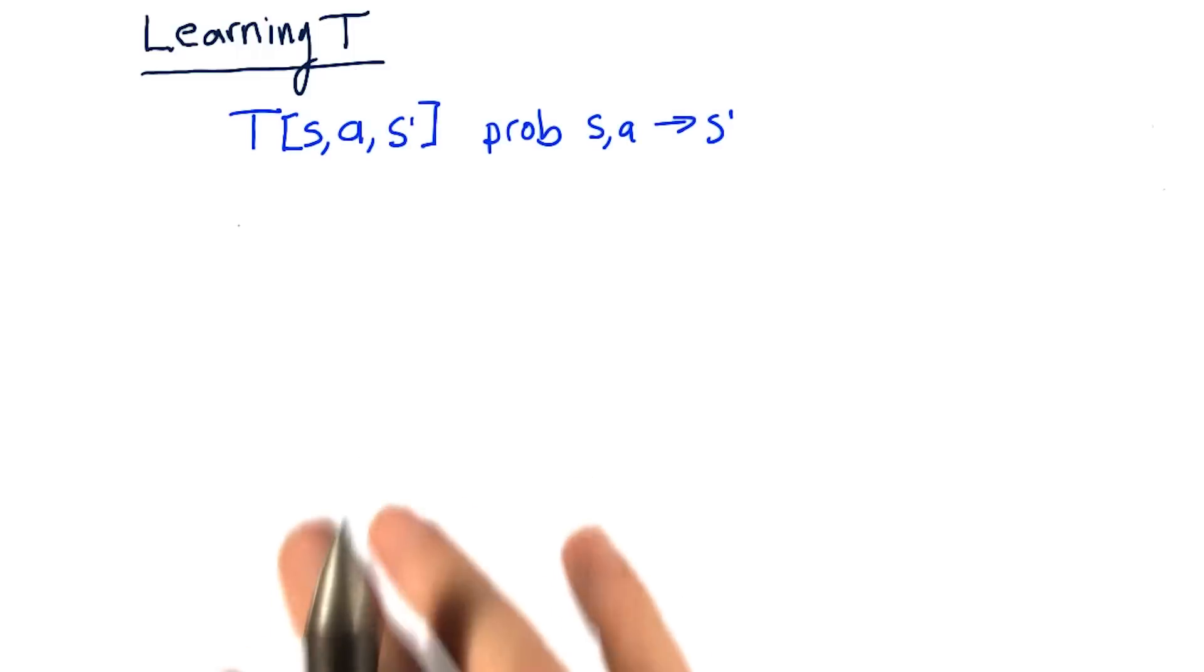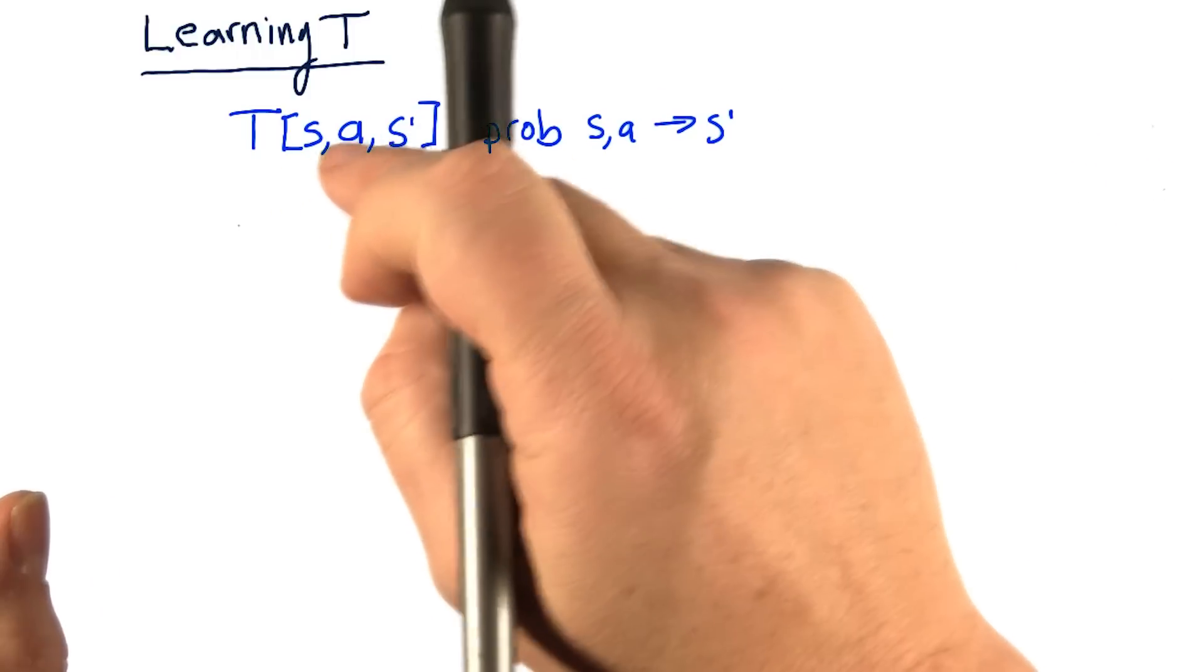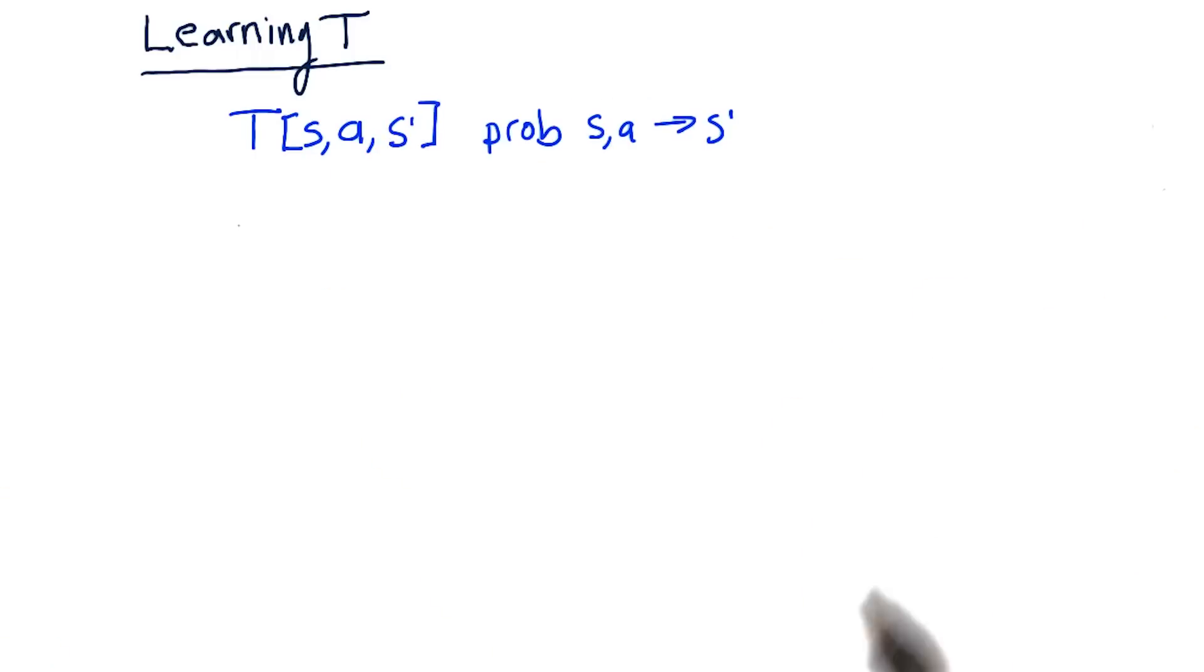we're just going to observe how these transitions occur. In other words, we'll have an experience with the real world. We'll get back an s, a, s prime, and we'll just count how many times it happened.